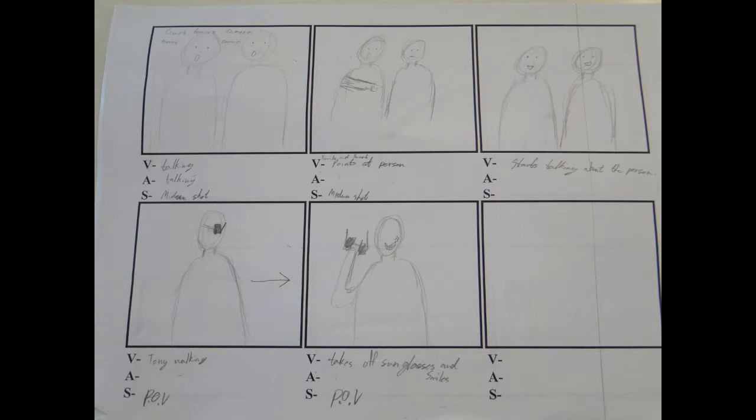Explaining this storyboard from left top to right bottom: in the first box there are two actors walking towards the camera, and then one of the actors shows a surprise reaction, and then the other person realizes it too.